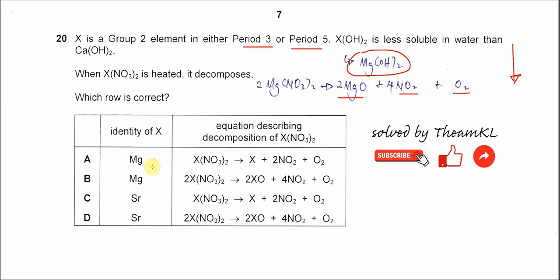Therefore, the answer is B. The identity of X is magnesium, and the equation shows magnesium nitrate decomposing to magnesium oxide, NO2, and oxygen.